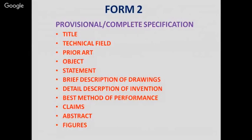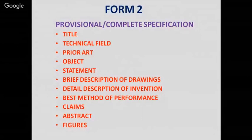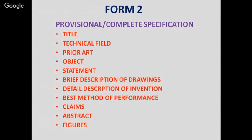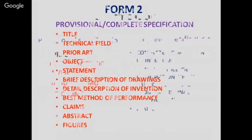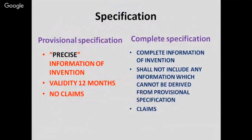The specification also includes a brief description of drawings — these need not be technically intricate and can be simple block diagrams or line diagrams — followed by detailed description, where all components and their working principles related to the invention must be written clearly. The best method of performance and the claims section follow. Claims are one of the most important parts of the patent, because in the event of any infringement, claims are the first thing looked into. Then comes the abstract and figures.